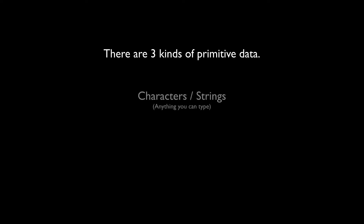There are really just three different kinds of data. First, characters and strings — basically anything you can type on your keyboard. Second, numbers — anything that's mathematically viable. If you add five and six you get 11, that's mathematically viable. If you add five and the letter g, you can't — g is not a number. The reason I make that distinction is that you can type numbers on your keyboard, so they can be either strings or numbers depending on whether you can add them together.